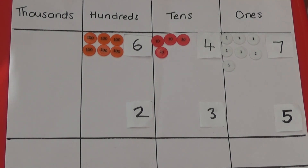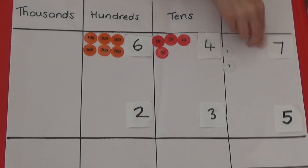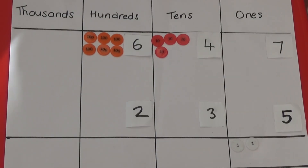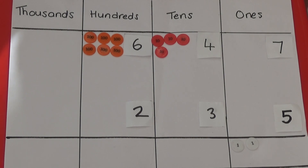I'm going to start by subtracting the five ones from the seven ones. I need to remove five counters and bring the rest down into the answer box. Then I'm going to subtract the three tens from the four tens and bring the remaining ten down to the answer box.